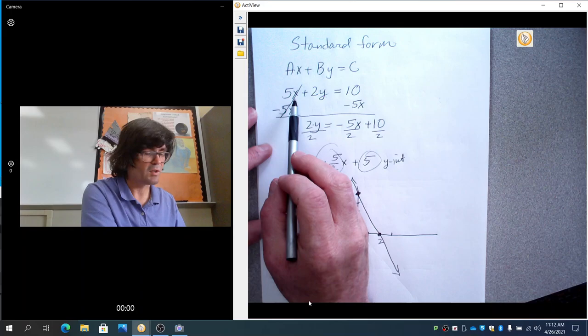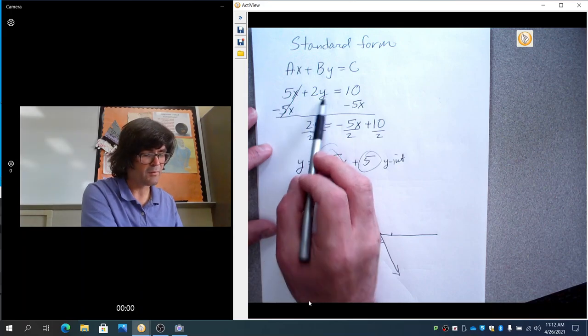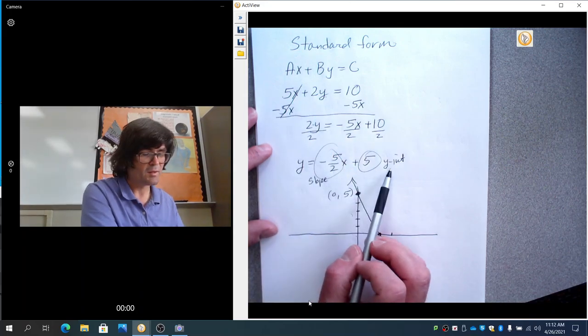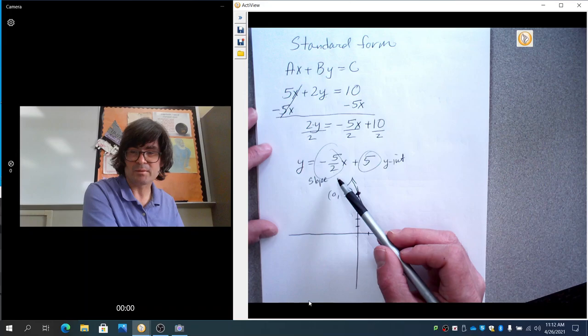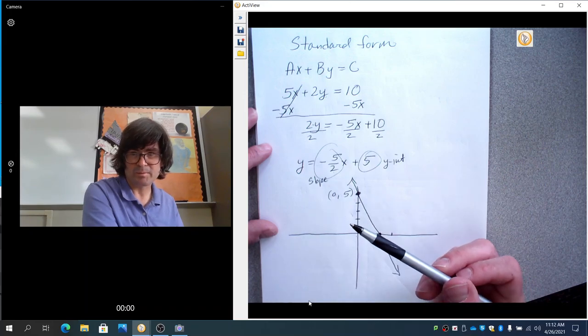So, again, I solved for y, converted this to slope-intercept form, graphed my y-intercept, used my slope to get a second point. I'm going to do this problem one more time, and we'll be done.